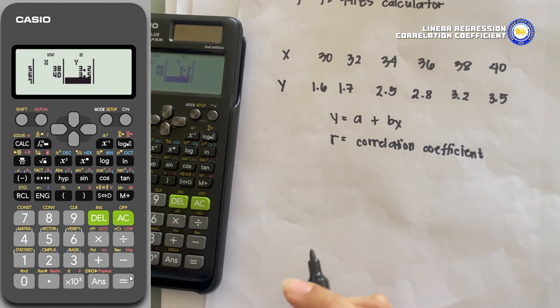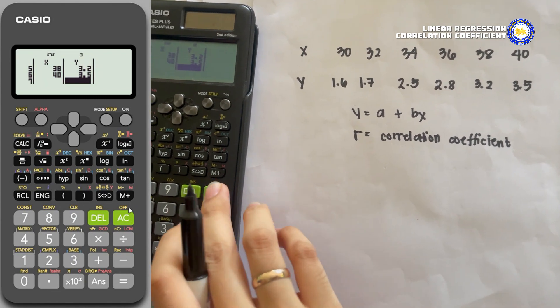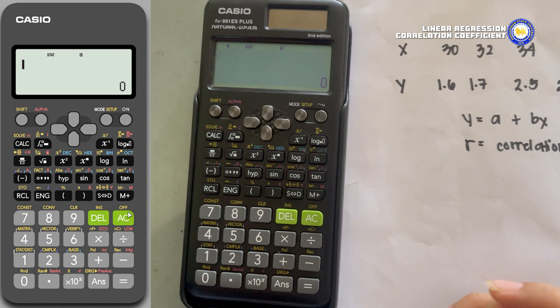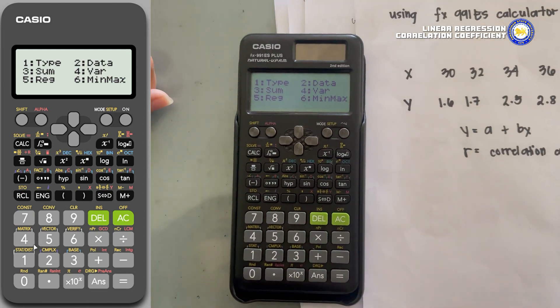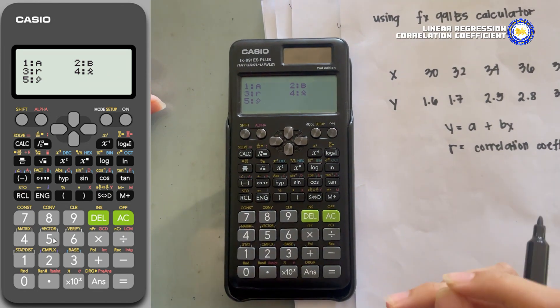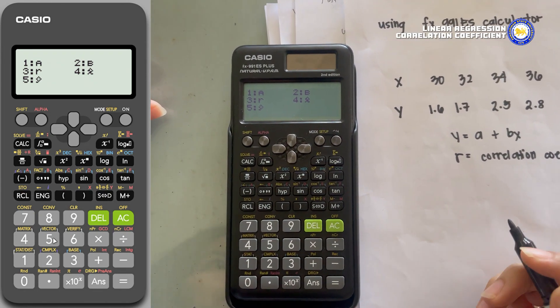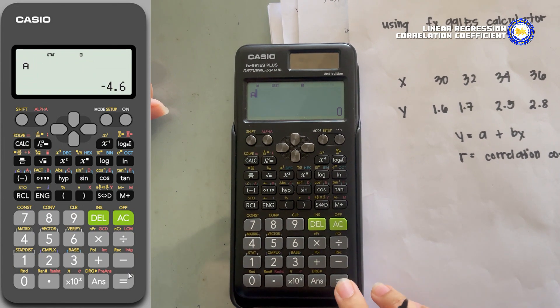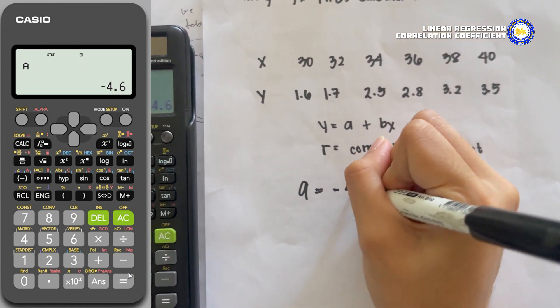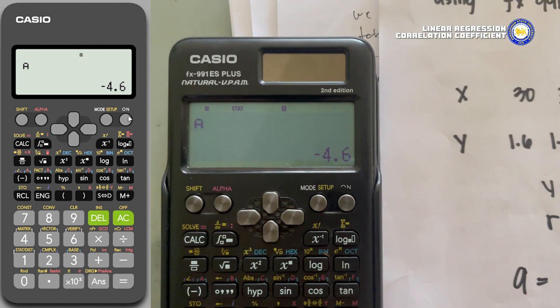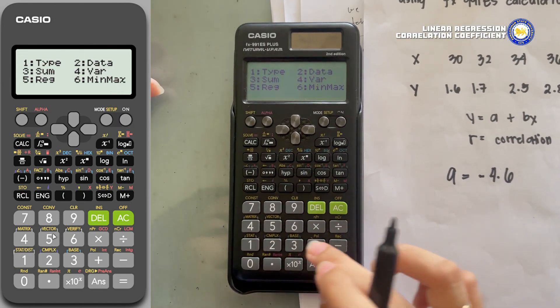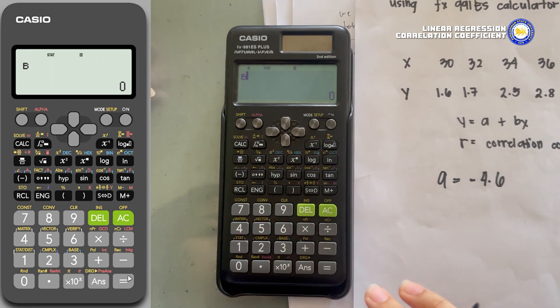After adding all the values, press AC. To find the values of a and b, we'll go to Shift, 1, and press Reg since a and b are regression values. To find a, press 1 and the equal sign. So we have a value of negative 4.6 for a. Repeat the process to get the value of b, which is 0.204.